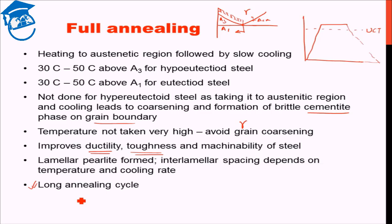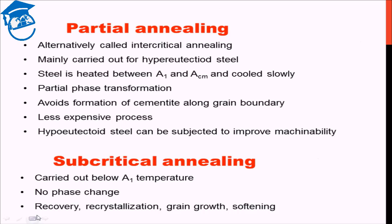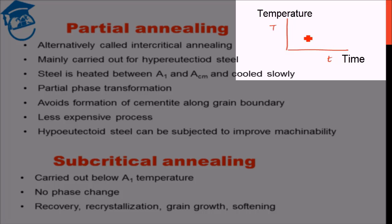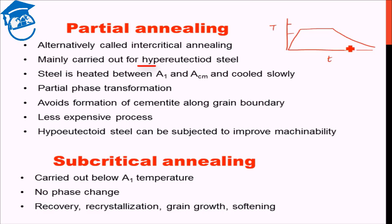Now let us look at partial annealing. The schedule is: on a time-temperature axis, we heat it above the lower critical temperature but below the upper critical temperature, hold it at that temperature for a certain time, and then cool it quite slowly. Partial annealing is normally done for hyper-eutectoid steel. For hyper-eutectoid steel we did not want cementite to form along the grain boundaries, so rather than the full annealing cycle we use the partial annealing cycle.